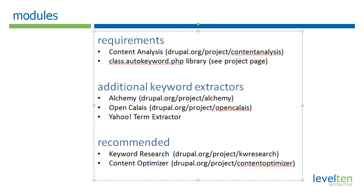What's interesting about this module is it's very fast — it happens locally on your server. There are additional keyword extractors out there; three of the most popular ones are Alchemy, Open Calais, and the Yahoo Term Extractor, and there are Drupal projects for those systems as well. However, all three have to send content out to a third-party website via an API and then wait for keywords to come back — which can take around ten seconds — and some people don't want to be sending all their content to a third-party website. There are also daily limits, though they're quite high — several hundred to thousands per day on the free versions. If you want to do basic keyword extraction locally, that's what the keyword analysis module does.